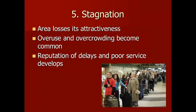In our fifth stage, we have stagnation. In this stage, the area starts to lose some of its attractiveness. Overuse and overcrowding become common — on a beach, for example, so many visitors cause environmental damage, taking away the attractiveness of the place. Overcrowding causes delays because airports and road infrastructure can't handle the massive influx of tourists, hurting the destination's reputation — it may become known for slow service, heavy traffic, or poor service in general.